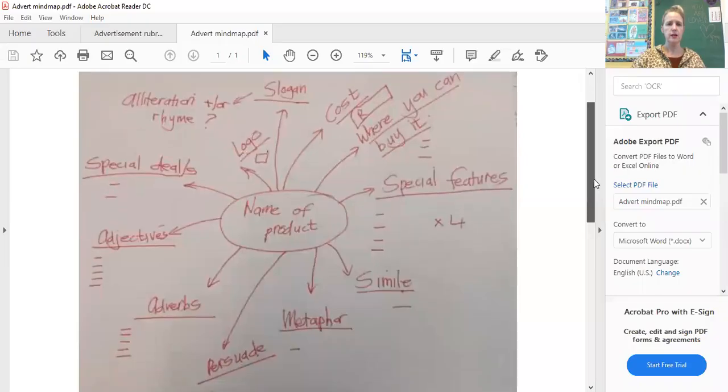So today we are going to start with our bite-sized pieces of our creative writing for our print advertisement. I am going to just quickly revise the planning with you that you're going to start today and what you need to have on your mind map. So let's go and have a look. Share your screen. My little mind map that I made. There you go.